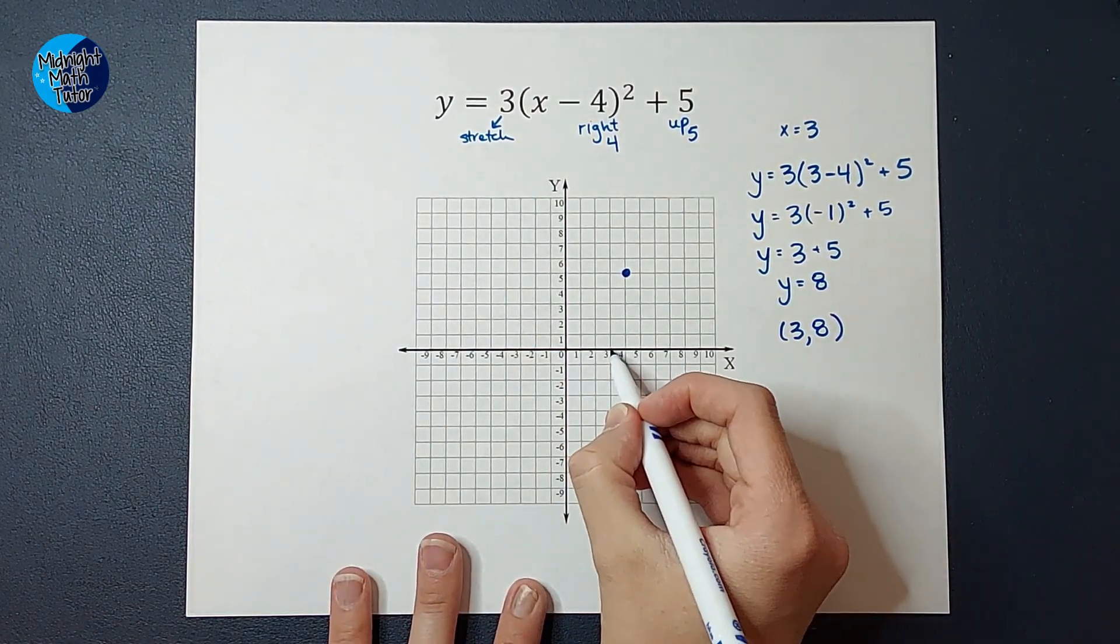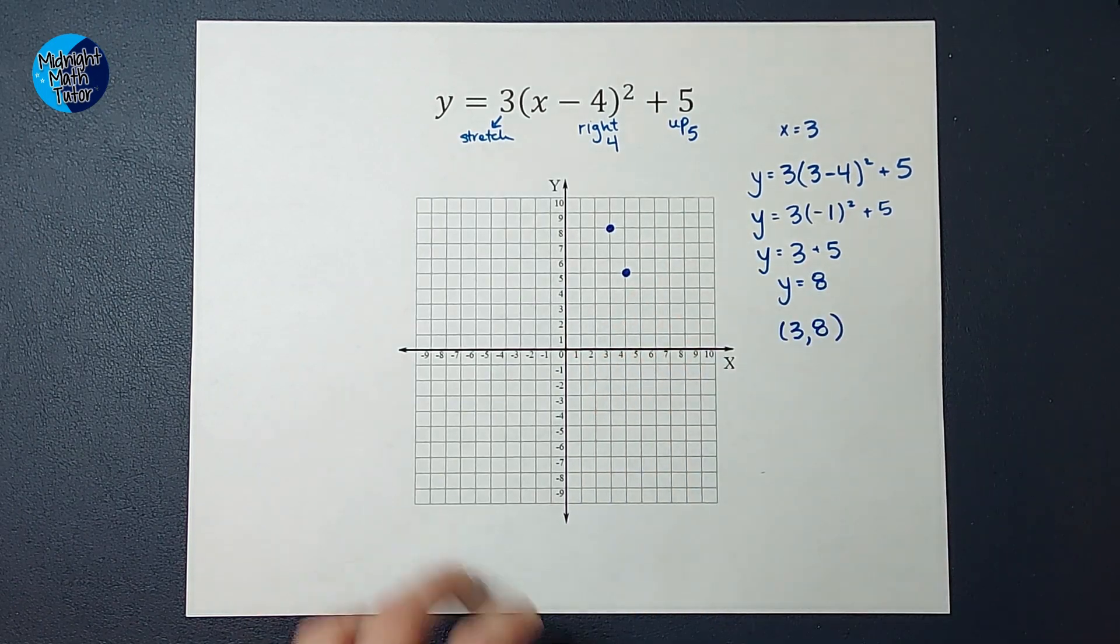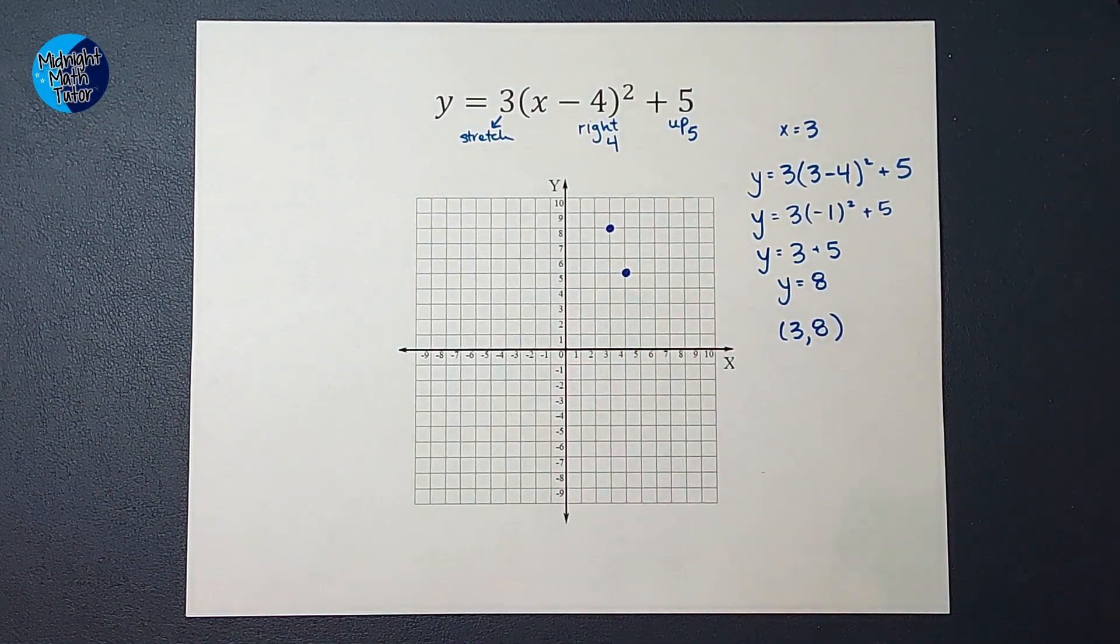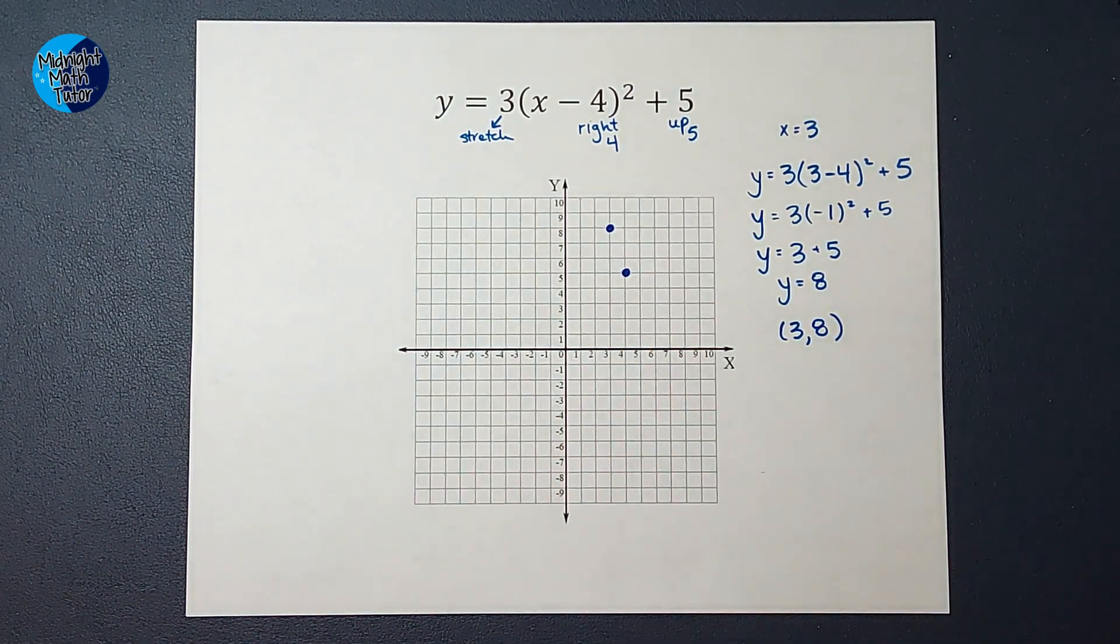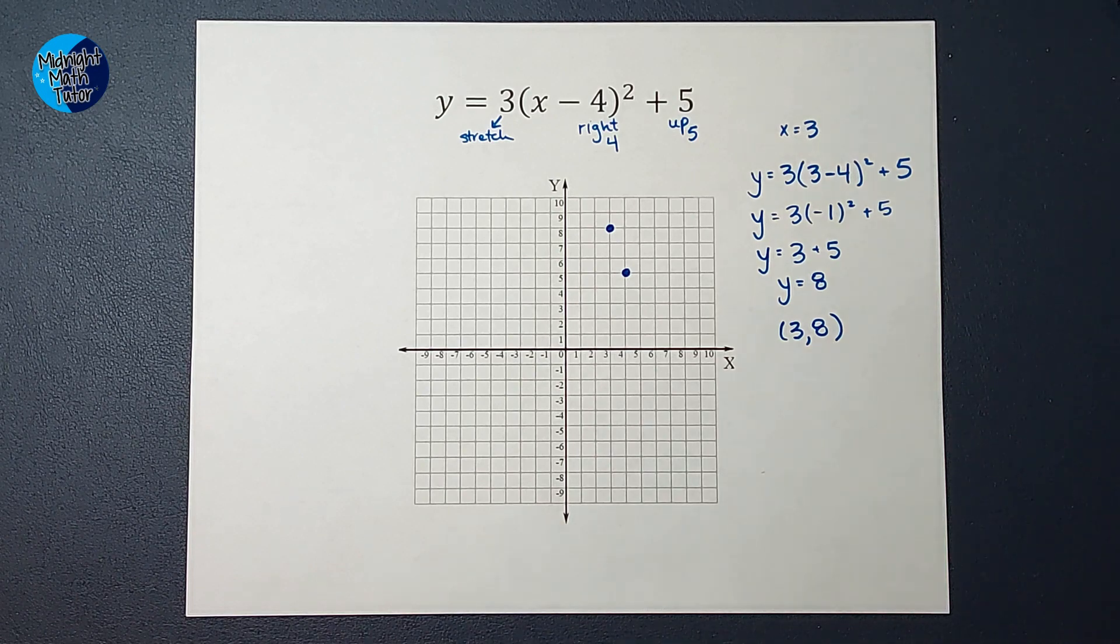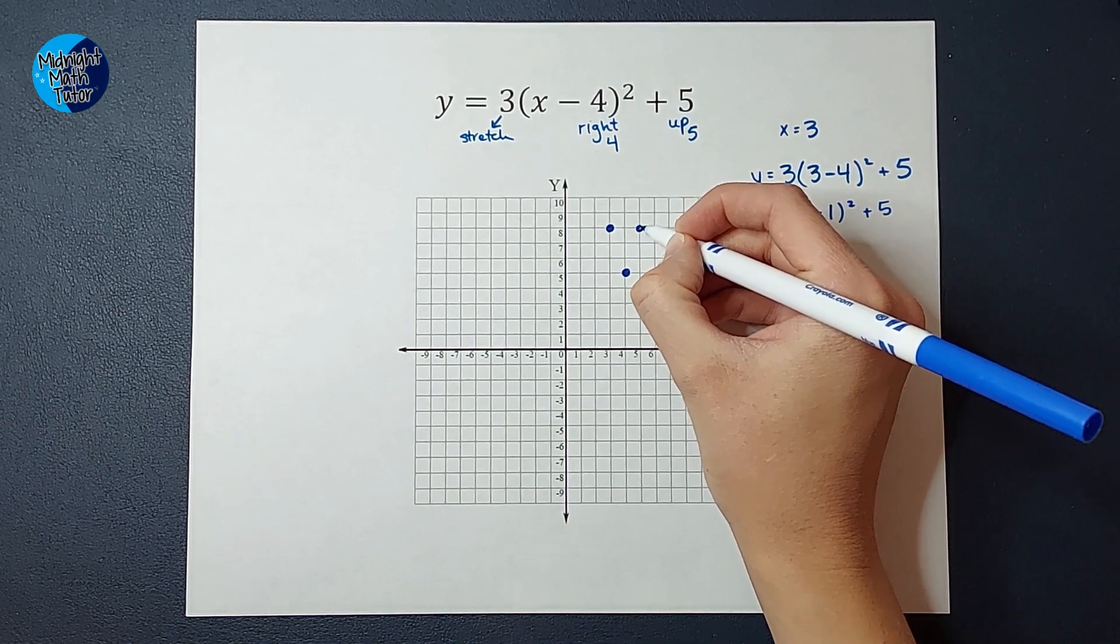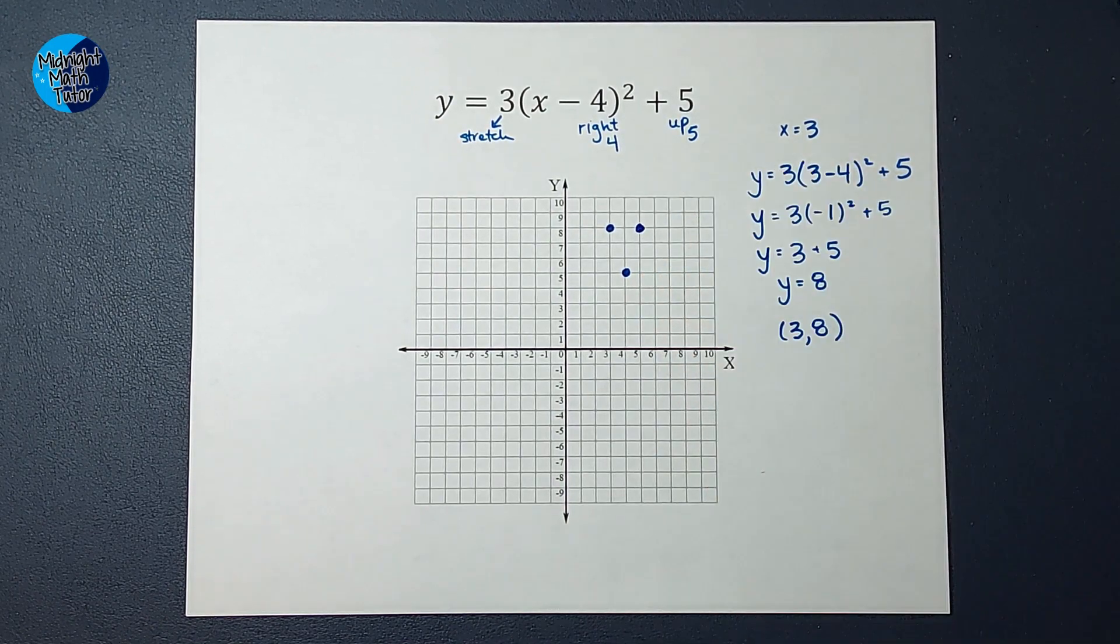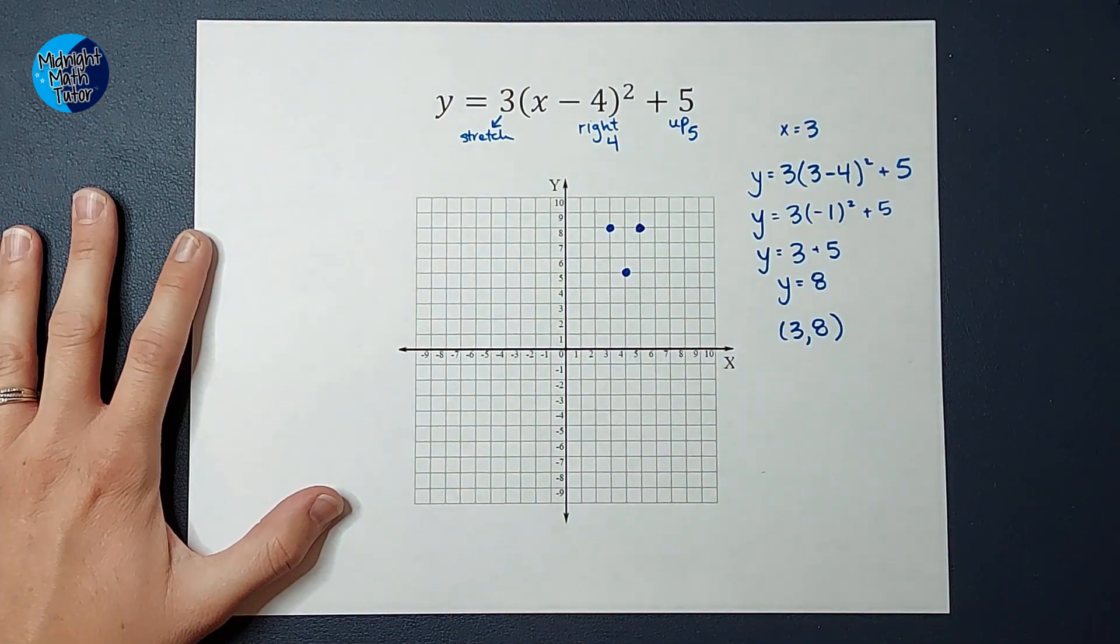So when I plugged in three for X, I got eight for Y. So I'm going to go three up to eight. There we go. There's another point. Now, I could go ahead and plug in five, but since I have worked with parabolas, I know a little bit about them. I know that they are symmetrical. So if I plug in five, I'm going to get eight. Now, if you're not super familiar with them yet, you can go ahead and plug that in to make sure, but I do know that when I plug in five, I would also get eight.